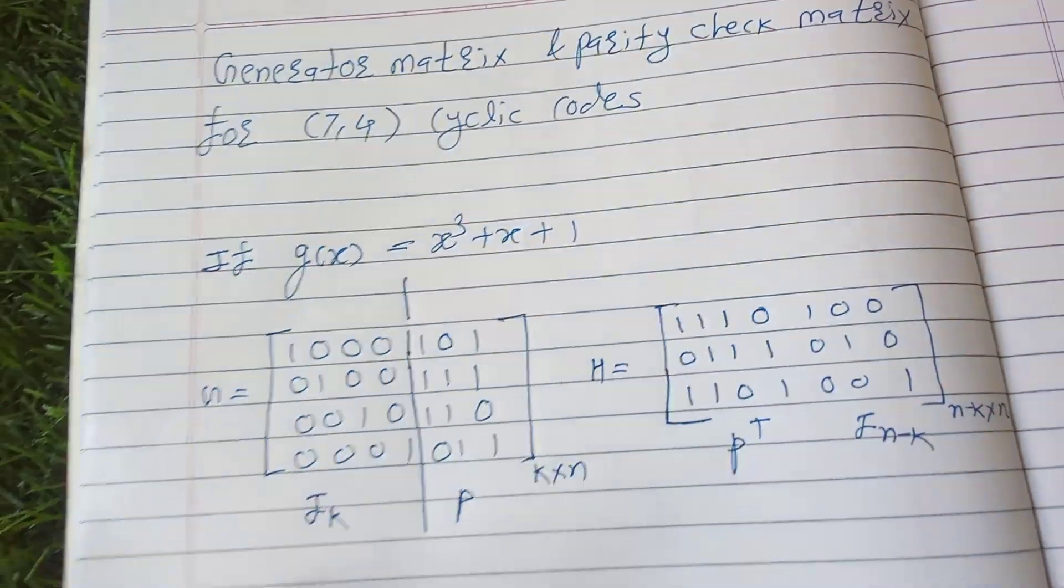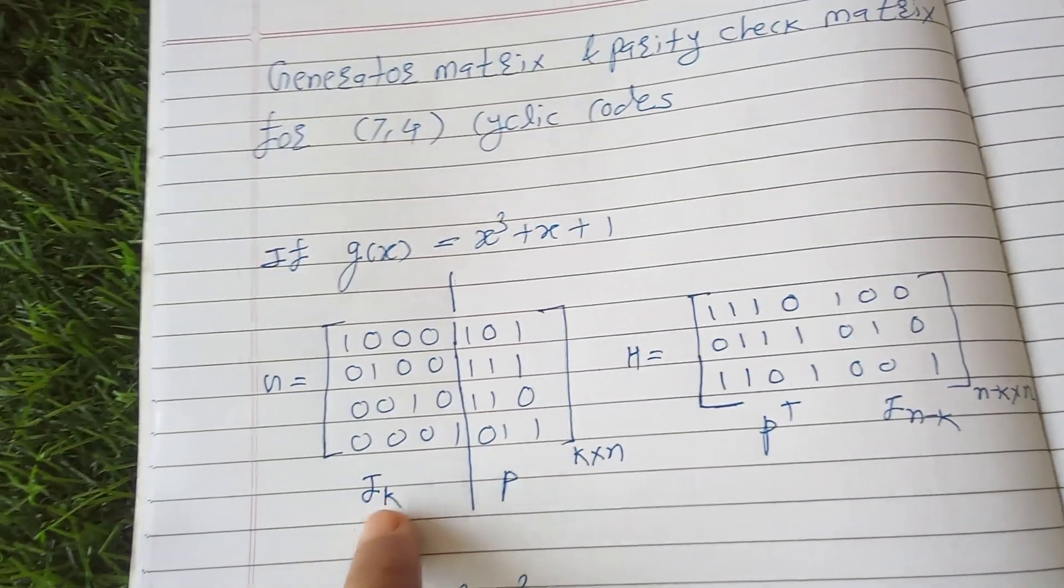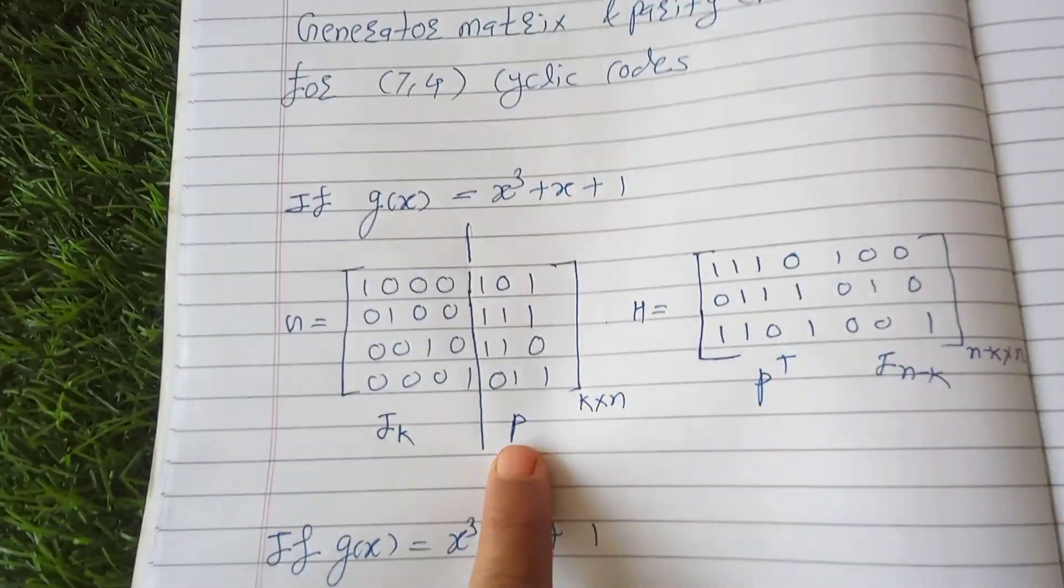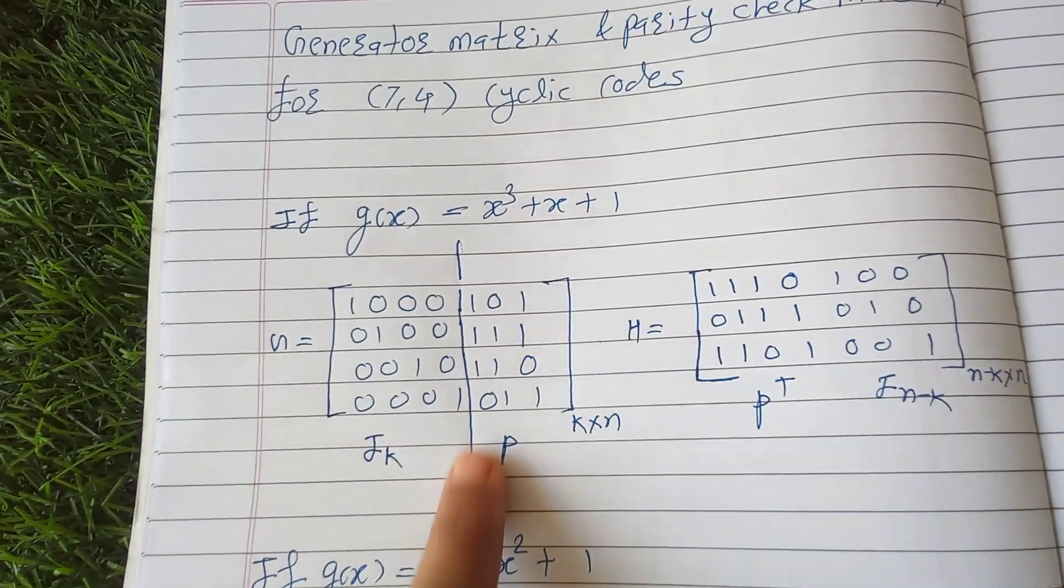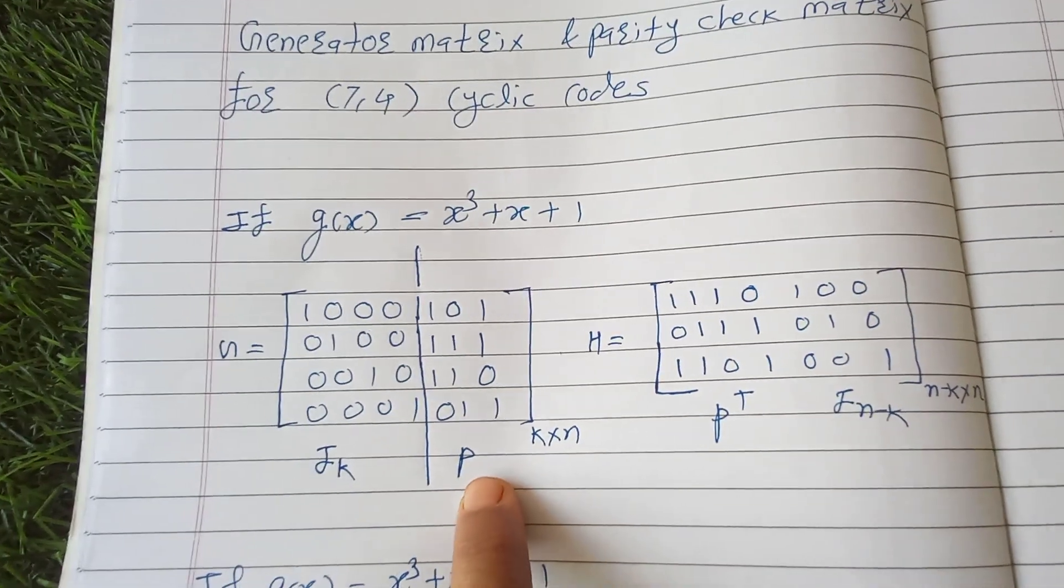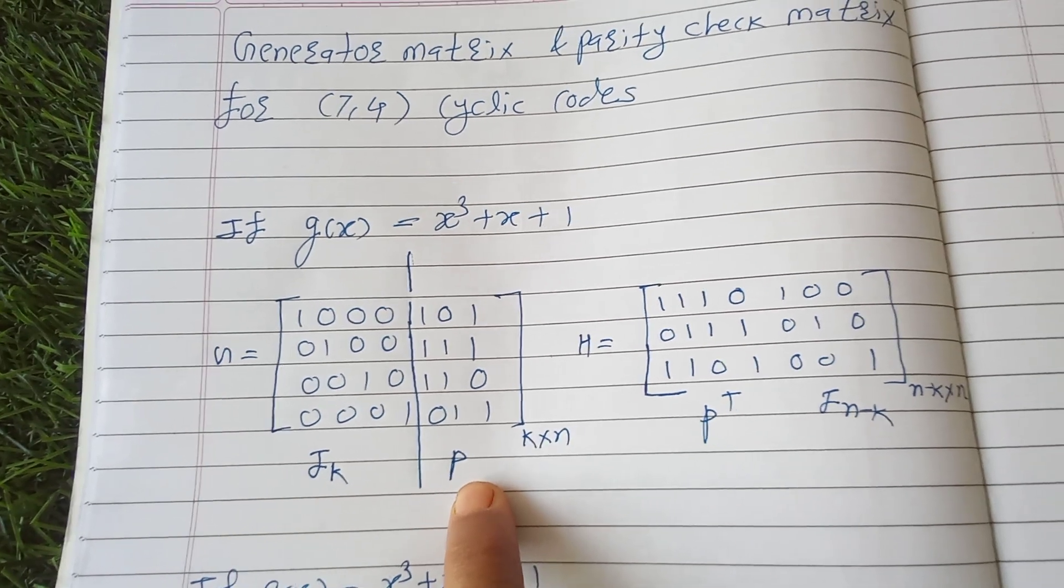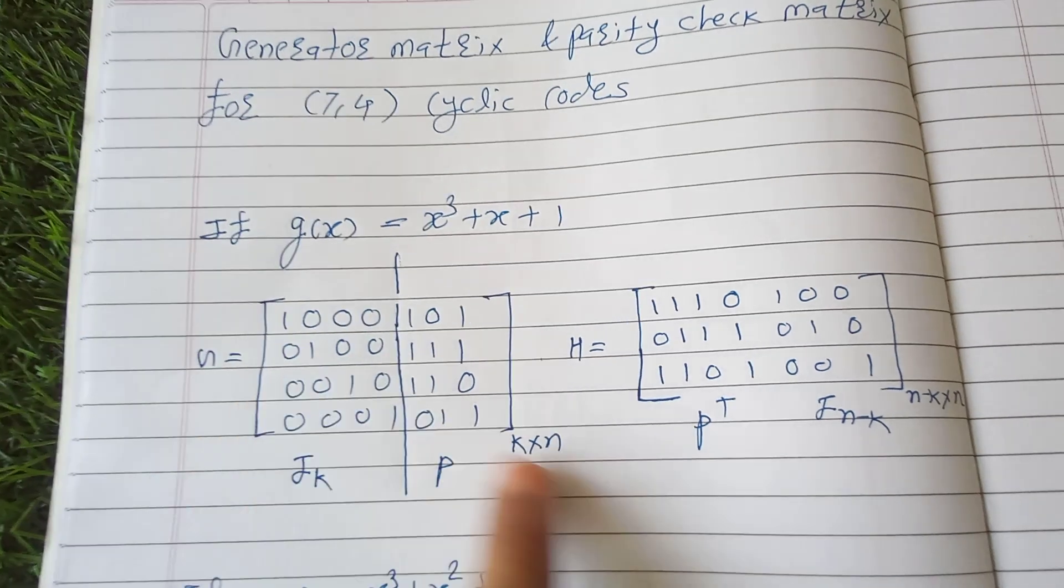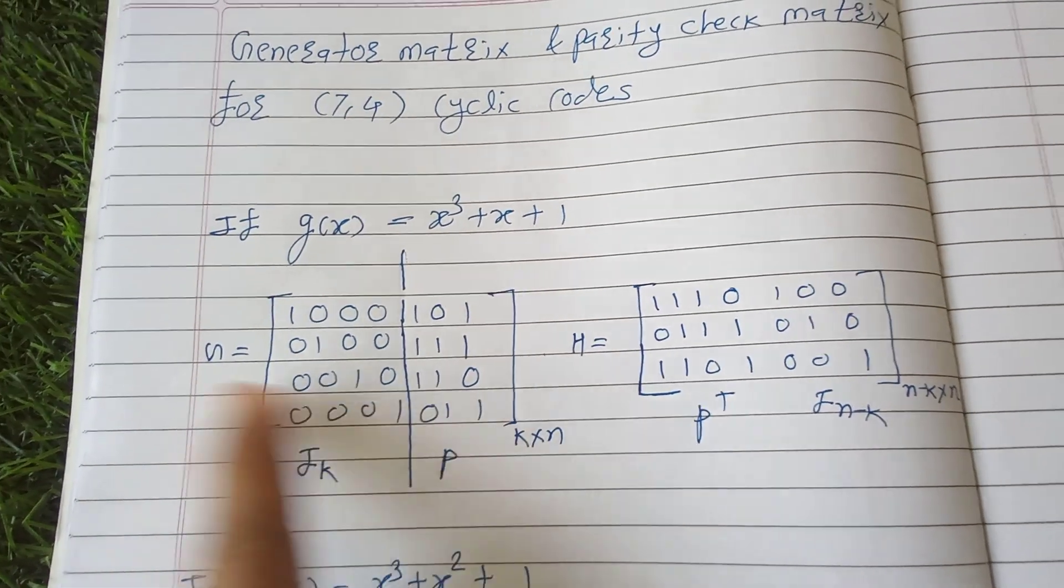It is in the form I_k P (k into n). You have to remember this. That means first is an identity matrix of dimension 4, then parity bits. Then k is the dimension rows of generator matrix and n is number of columns of the generator matrix.